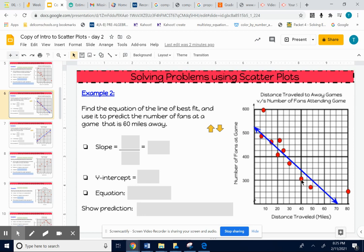This is just a scatter plot showing some real information of a problem like that. We want to find the equation of the line of best fit, which they gave us - they went ahead and drew the line of best fit. We want to use that to predict the number of fans at a game that is 60 miles away.